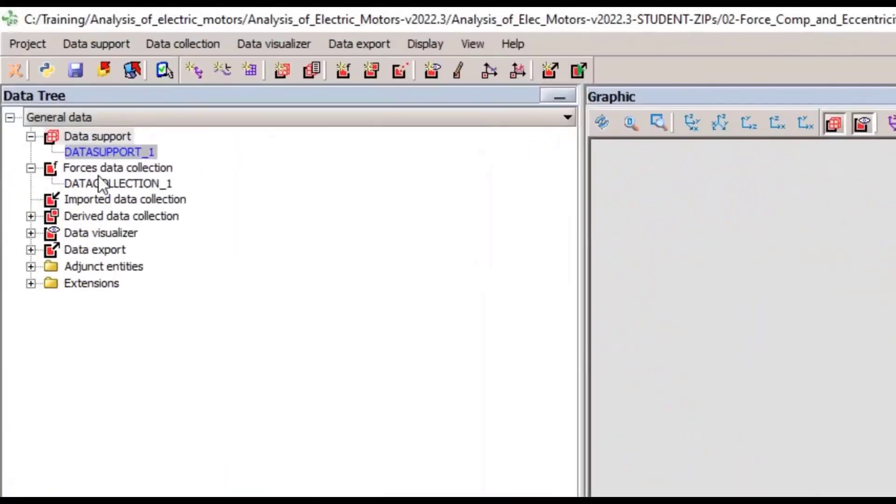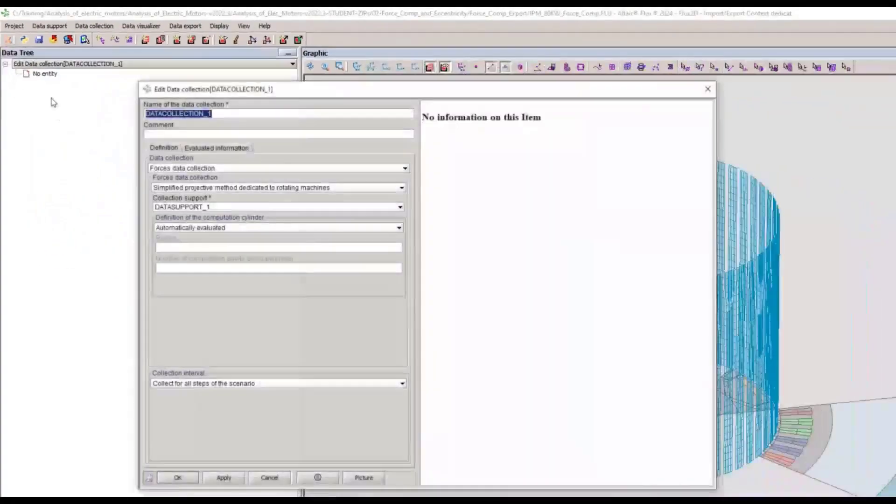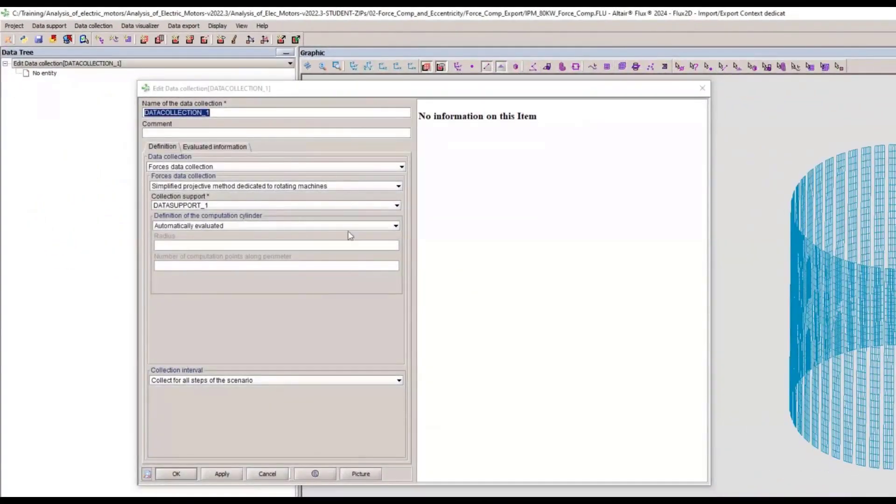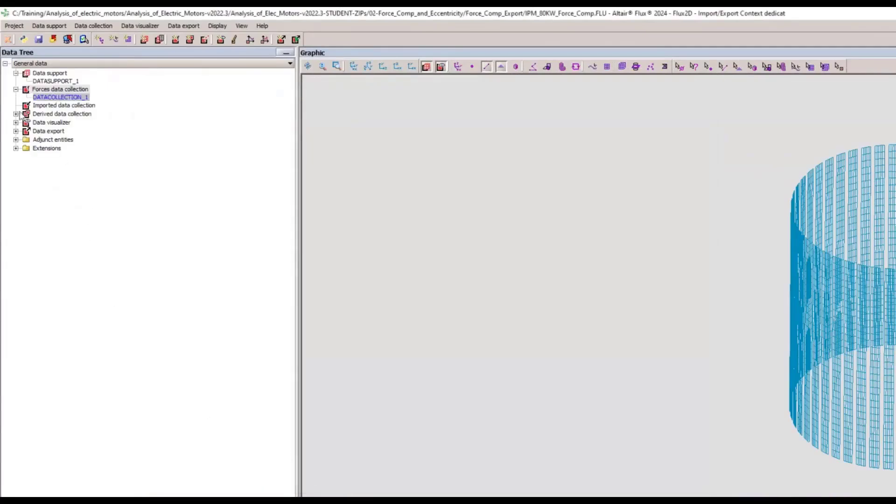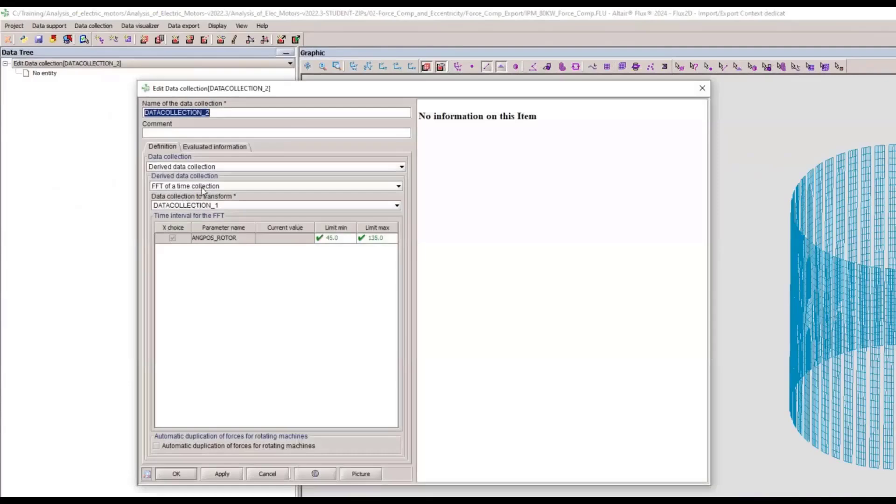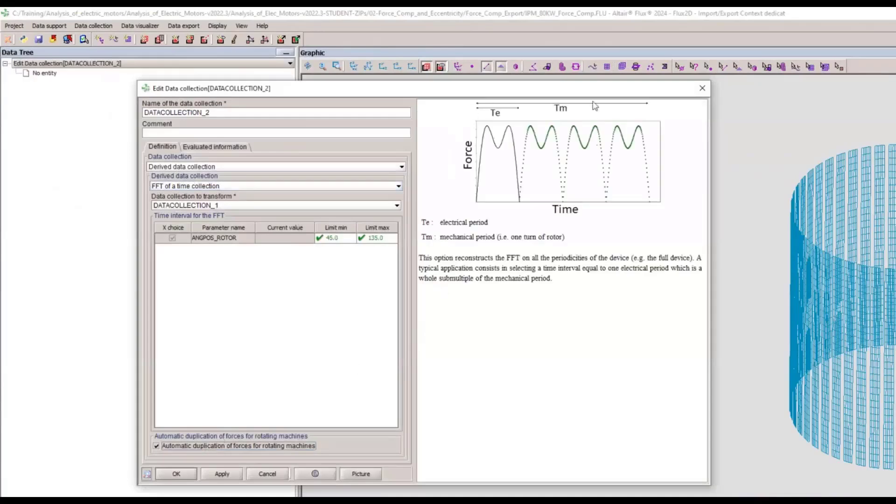Once we have this data support, we can create a force collection. So here we use the simplified method for a cylinder projection, but you can see we have access to the other type of method. And Flux will evaluate automatically the right cylinder for that. On top of this force collection, we can create an FFT collection. So that will just reuse the first collection on a given interval, and it's also able to duplicate the force as if you have solved the Flux model for an entire rotation.